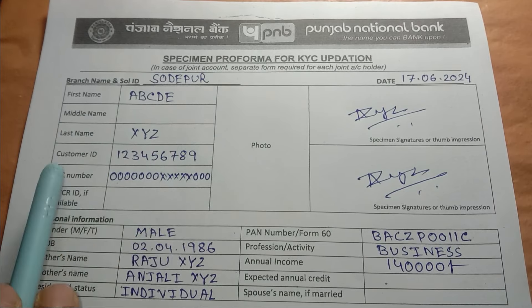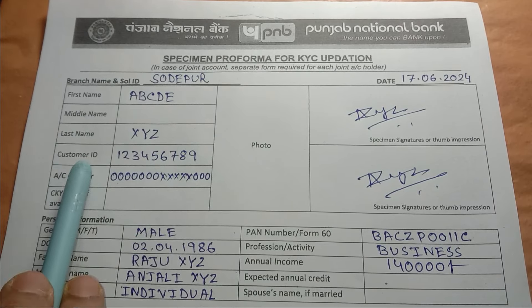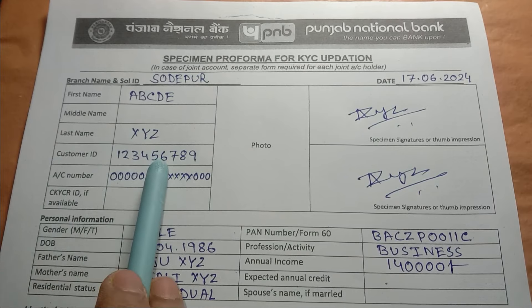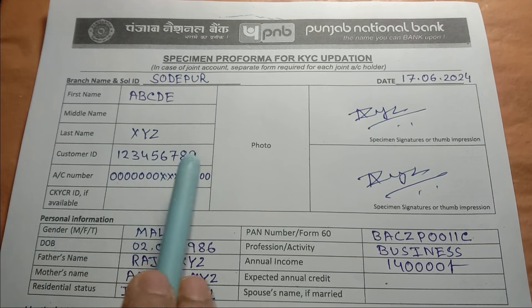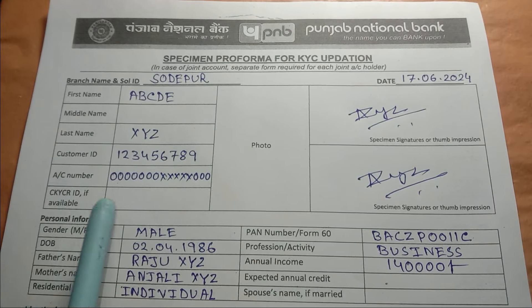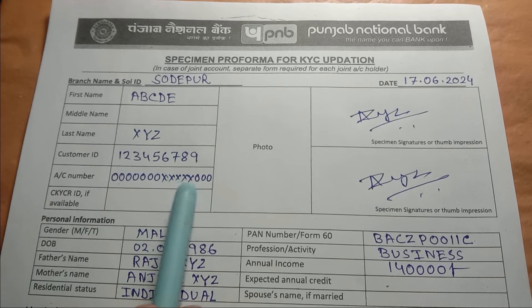We can write the title, we can write the customer ID, and we can write the account number.